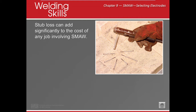Stub loss is one reason stick welding isn't as popular as it used to be — we lose material from the unused stub. A 50-pound box of 6010 rod that cost $50 when I went to school now costs $152. Flux core welding on a wire spool eliminates stub waste and allows continuous welding, though stick equipment is less expensive.